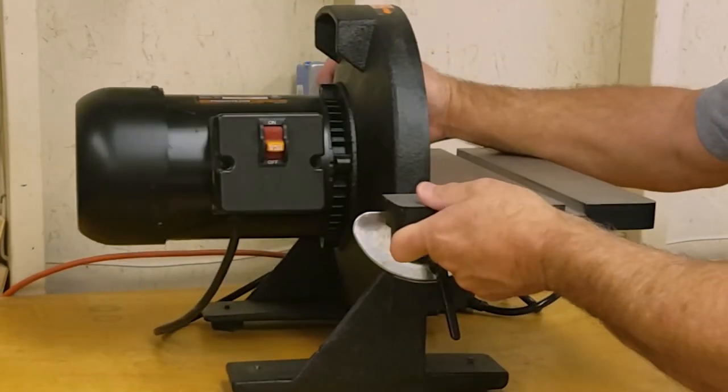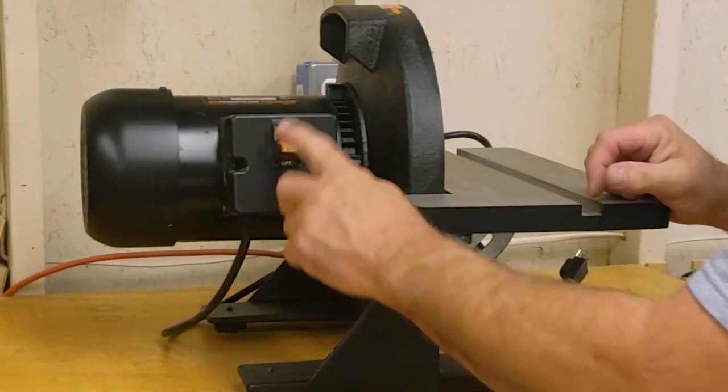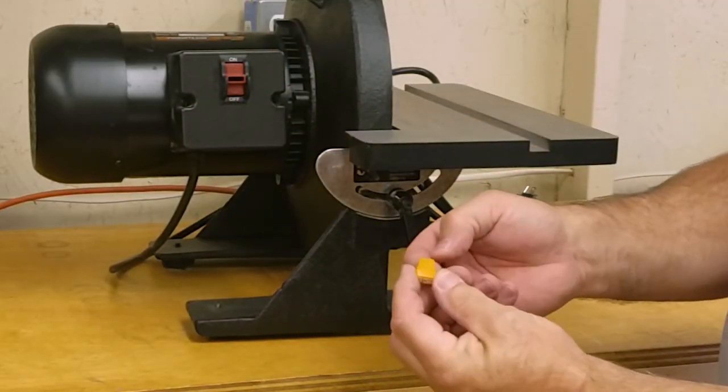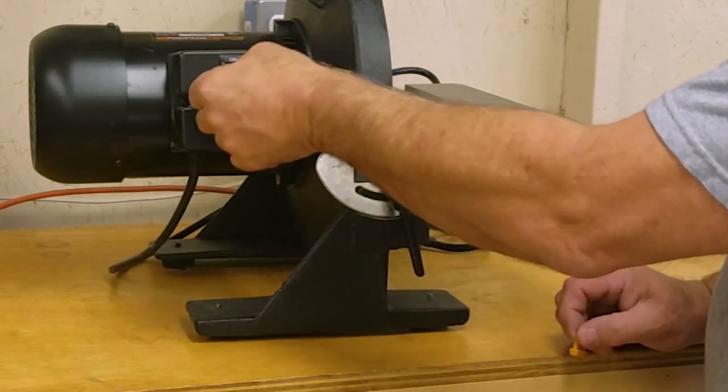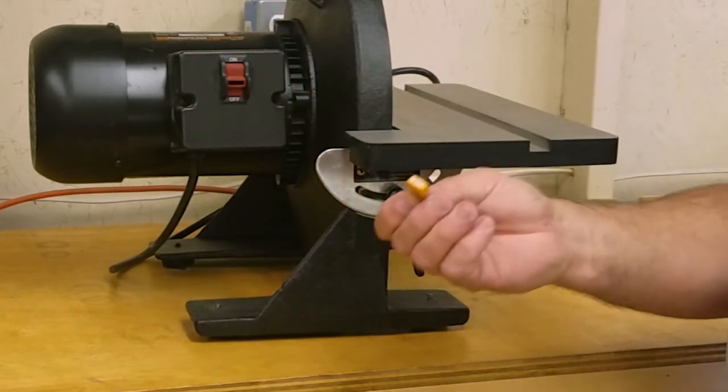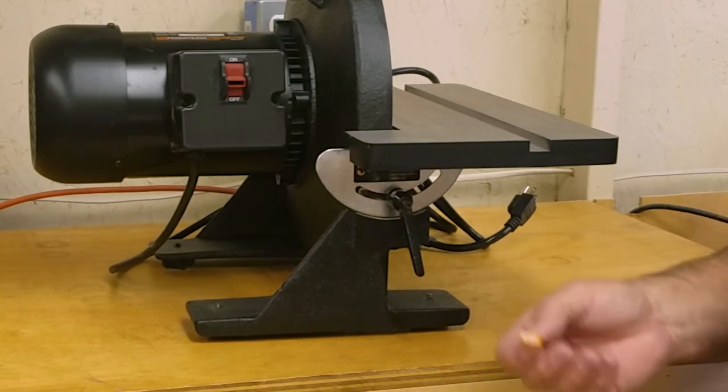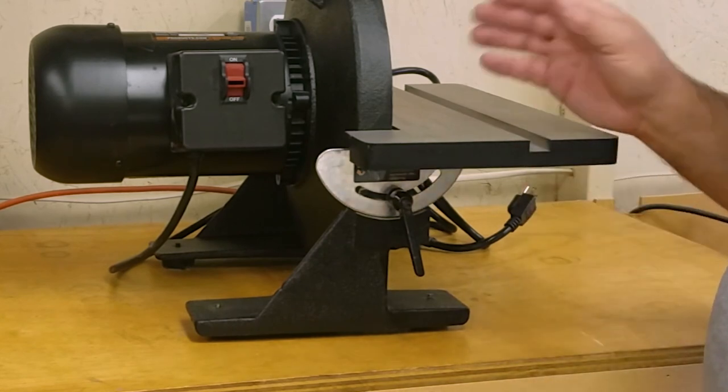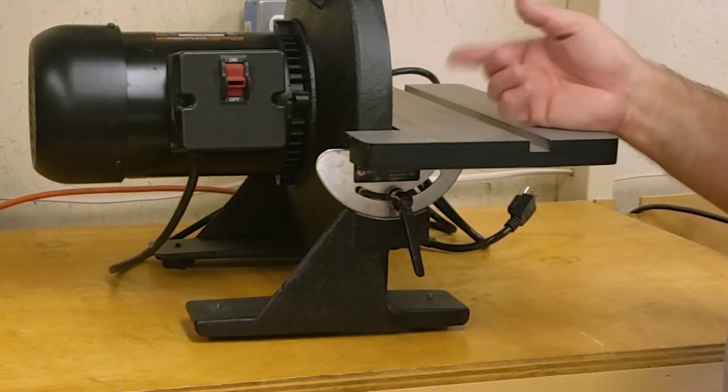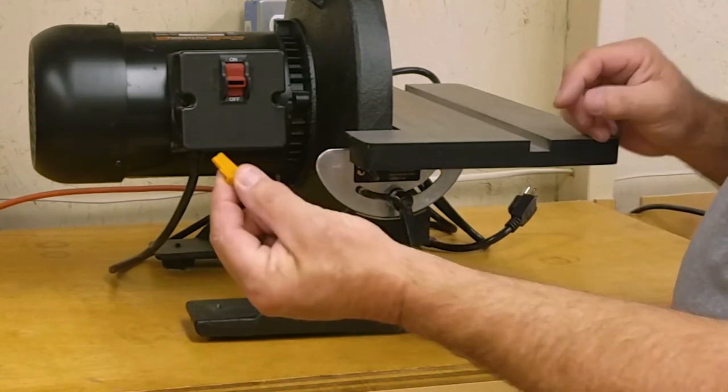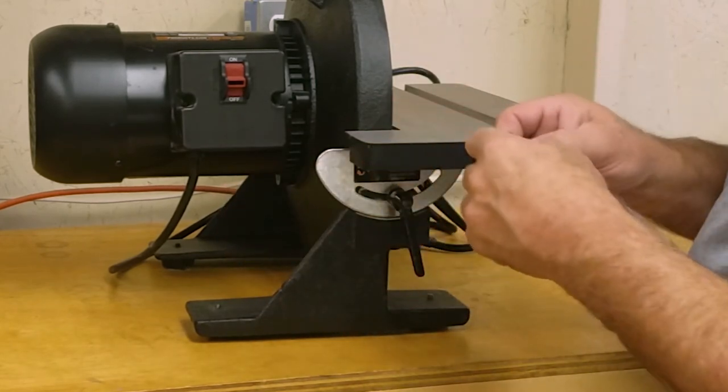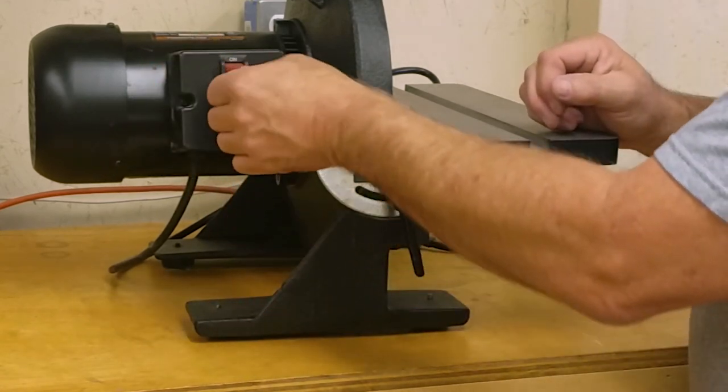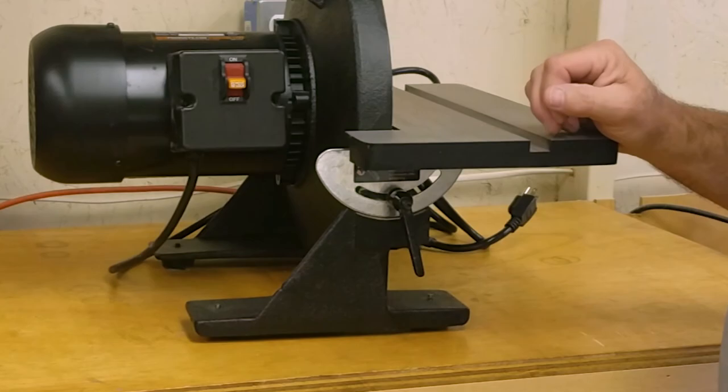Now one of the safety features that this does have is on the on-off switch, there is a removable plunger. And now it will not turn on with that removed. So if maybe your shop is in the basement and you need to secure the tool so that you don't get little kids that cut it on and stick their finger to that 60 grit disc, you can remove the plunger and it disables the tool. That just simply pops back in and then you can cut it back on.